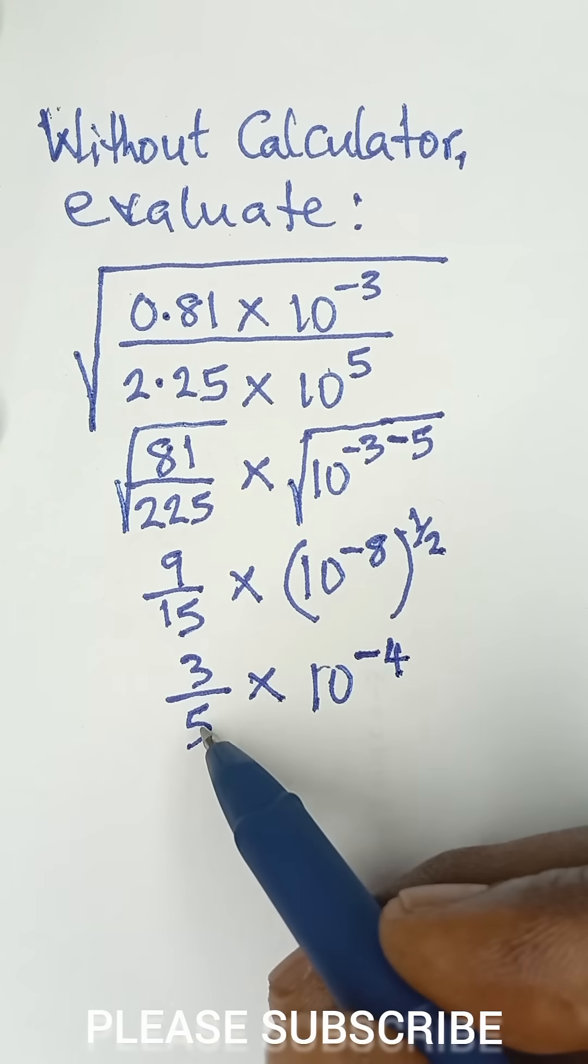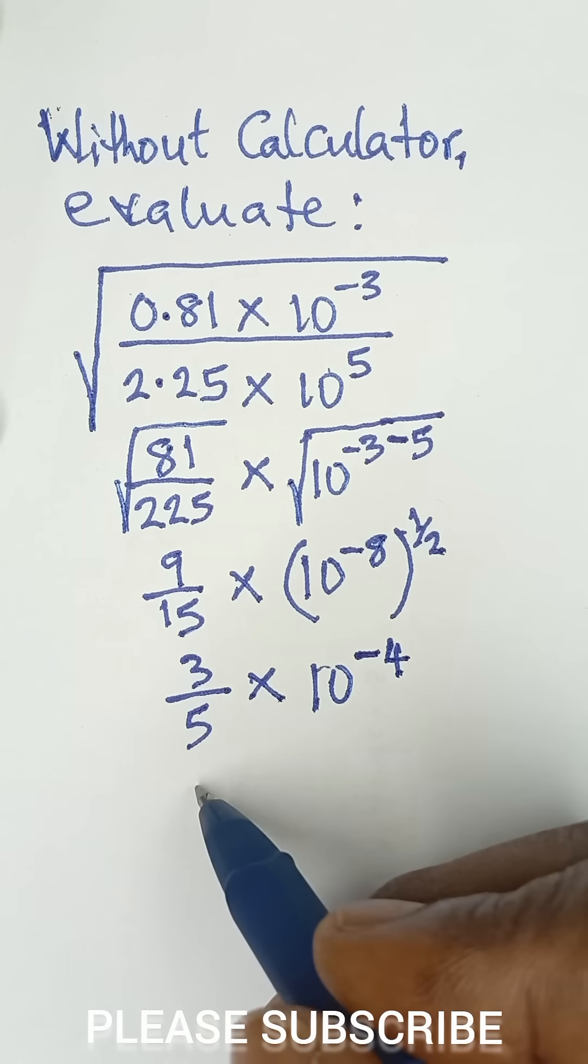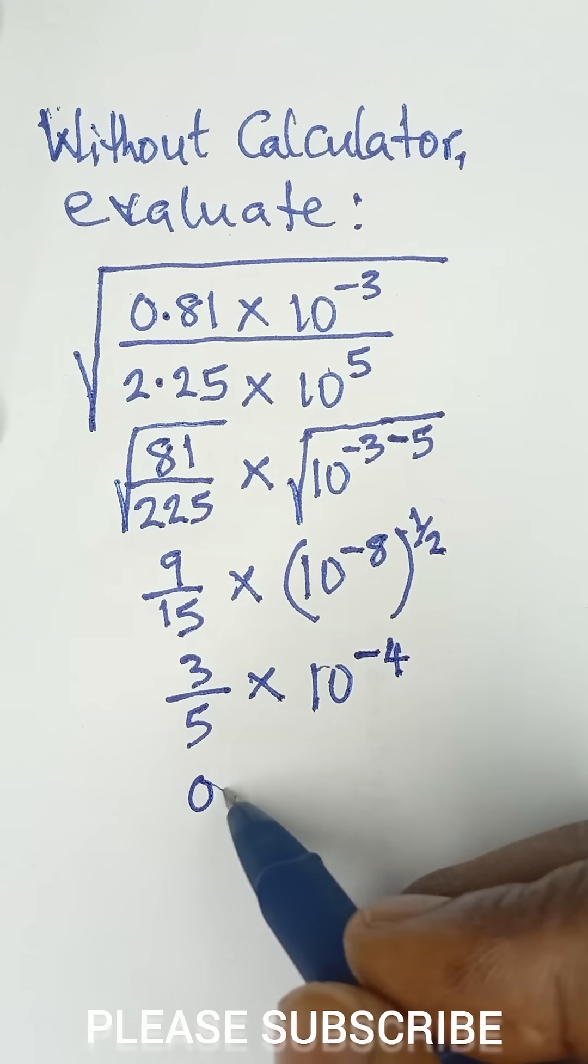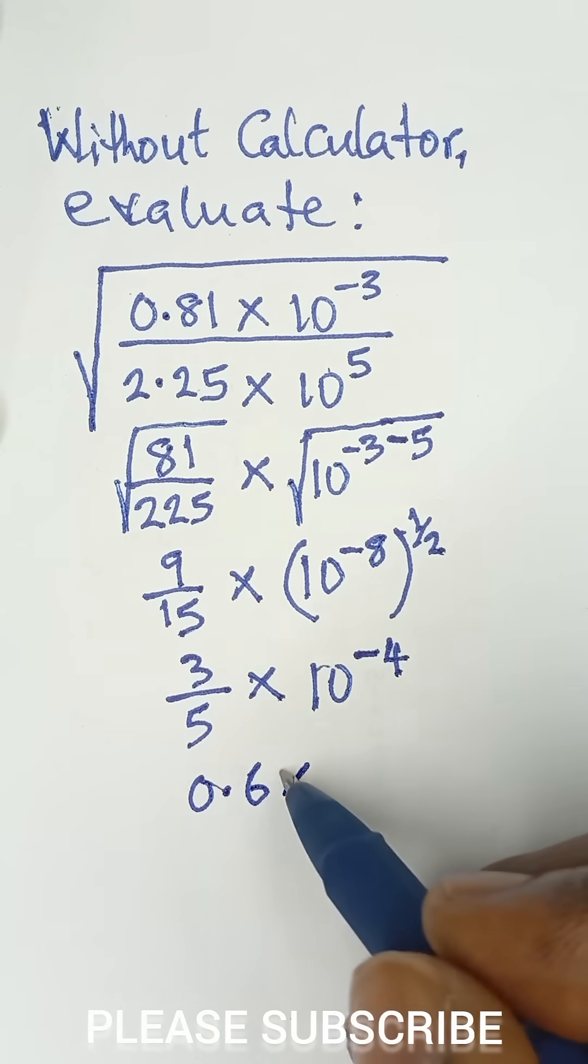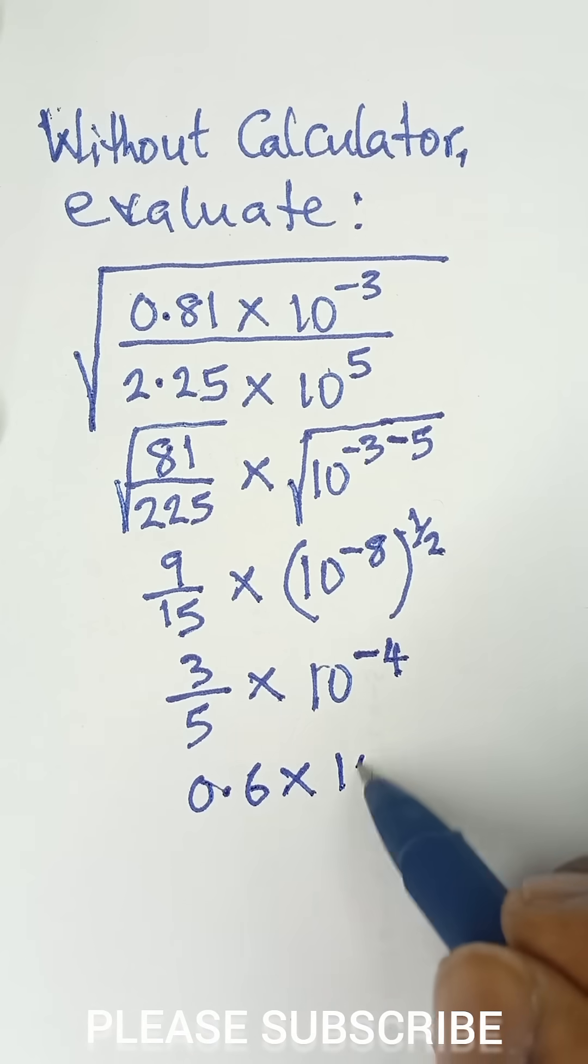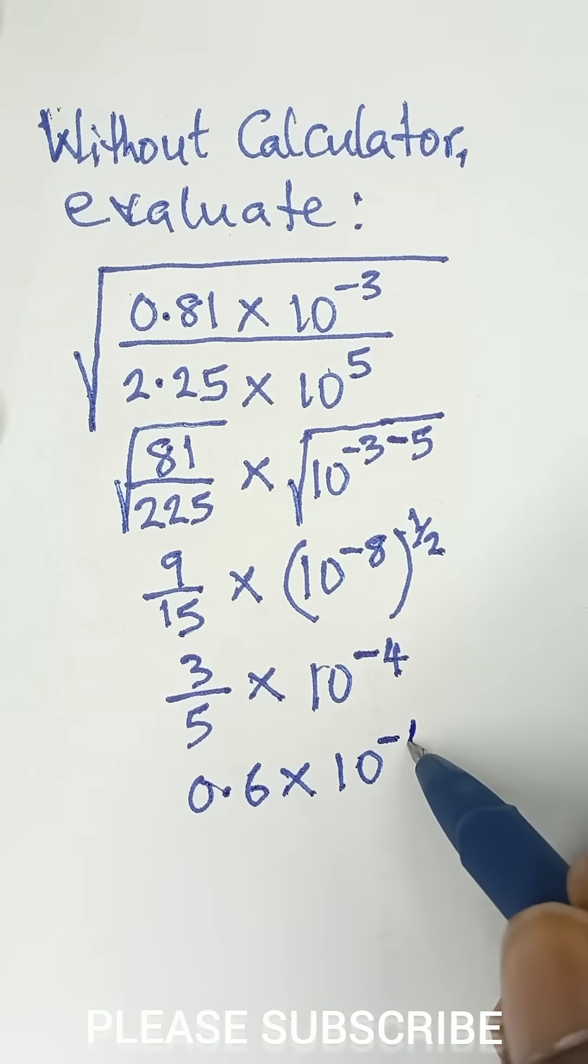So this 3 divided by 5 will give us 0.6, and then multiply by 10 raised to the power negative 4.